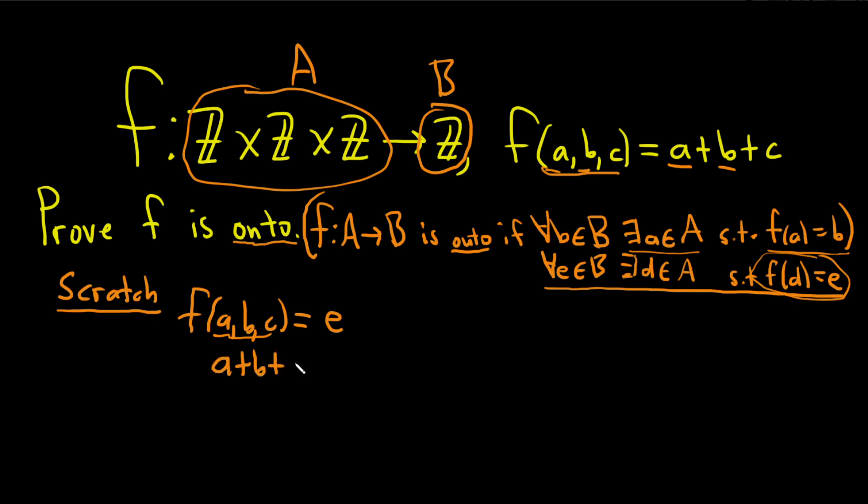Well, what is f of ABC? That's A plus B plus C equals E. So we need to find A, B, and C such that if we add them up, we get E. While A, B, and C must be integers and 0 is a wonderful integer. So what we can do is we can take A equal to 0, B equal to 0, and C equal to E.